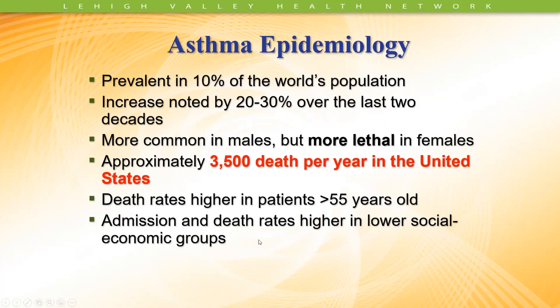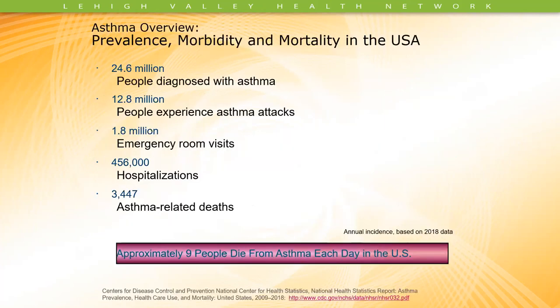Asthma is often referred to not just as a physiological disease but also a socioeconomic disease, because individuals with lower socioeconomic status have more exposure to asthma triggers. In the United States, there are 24.6 million patients diagnosed with asthma. Almost half experience asthma attacks, 1.8 million go to emergency rooms, and almost half a million are hospitalized. Per 2018 data, close to 3,500 asthma deaths per year — nearly nine people die from asthma each day in the United States.